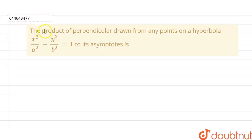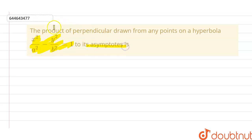The given question here is: find the product of perpendiculars drawn from any point on a hyperbola x²/a² - y²/b² = 1 to its asymptotes. So basically we have to find the product of perpendiculars drawn from any point on the hyperbola curve to its asymptotes.